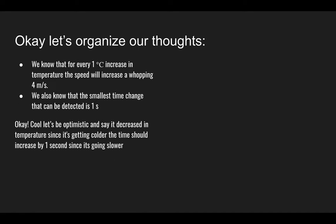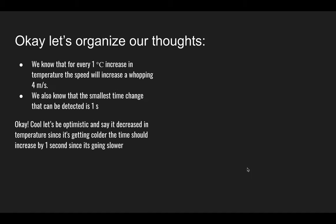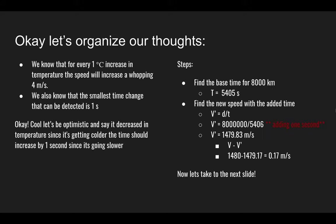Let's go back and reorganize our thoughts. We know that for every 1 degree Celsius increase in temperature, the speed will increase a whopping 4 meters per second. And we know that the smallest time change that can be detected is 1 second. We're going to take the time that we found, 5405 seconds, and either add or subtract 1 second. We're going to be optimistic and subtract 1 second, which basically implies the ocean is getting colder and global warming is fake. Ha ha. So we're going to add a second. Everything's getting slower.